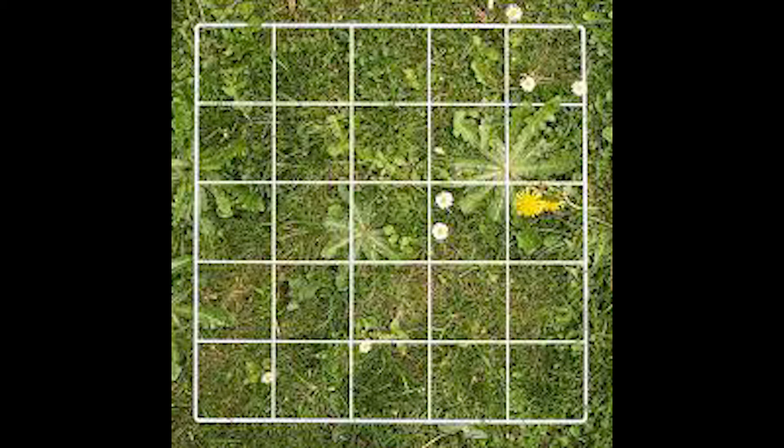The quadrat is a common sampling method used in biology. Quadrats are small identical size plots which are randomly placed over a study site to measure sample size.